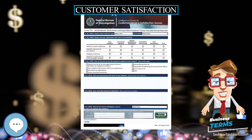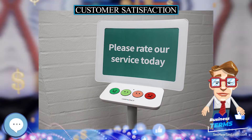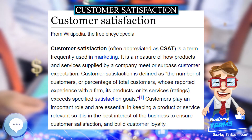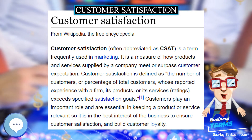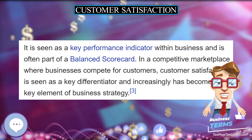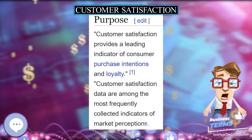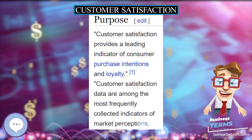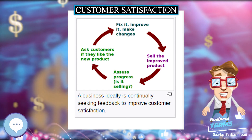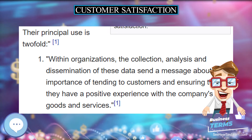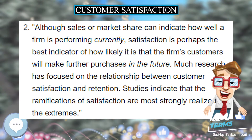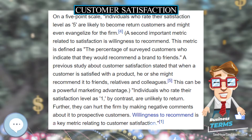Hedonic benefits are associated with the sensory and experiential attributes of the product. Utilitarian benefits of a product are associated with the more instrumental and functional attributes of the product, Batra and Ahtola, 1990. Customer satisfaction is an ambiguous and abstract concept and the actual manifestation of the state of satisfaction will vary from person to person and product/service to product/service. The state of satisfaction depends on a number of both psychological and physical variables which correlate with satisfaction behaviors such as return and recommend rate.